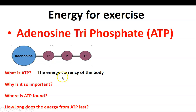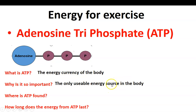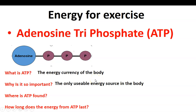Why is ATP so important? To summarise: it's the only usable energy source in the body. It's the energy currency of the body, and it's the only way we can use energy in the body. Those two things really do emphasise the importance of adenosine triphosphate when we are performing muscular contractions within exercise.